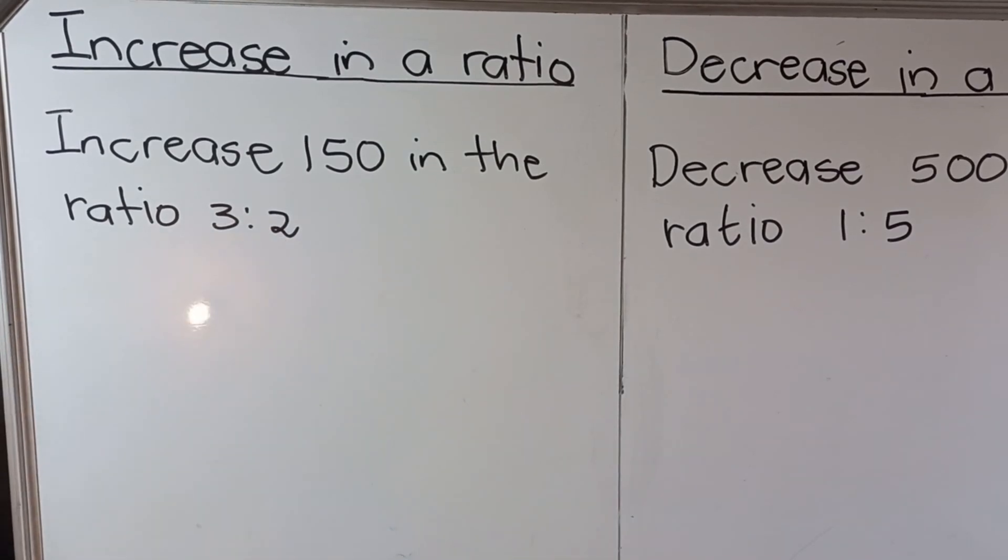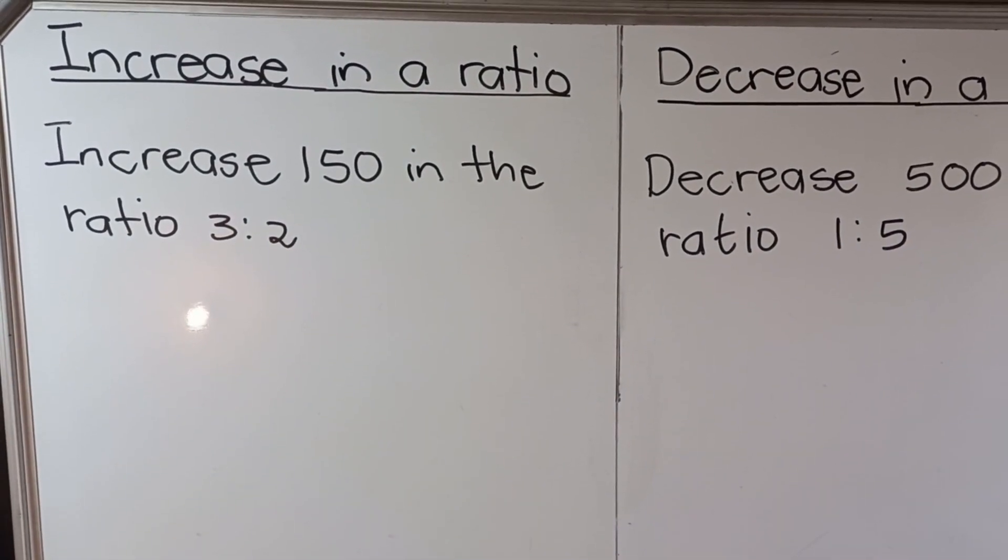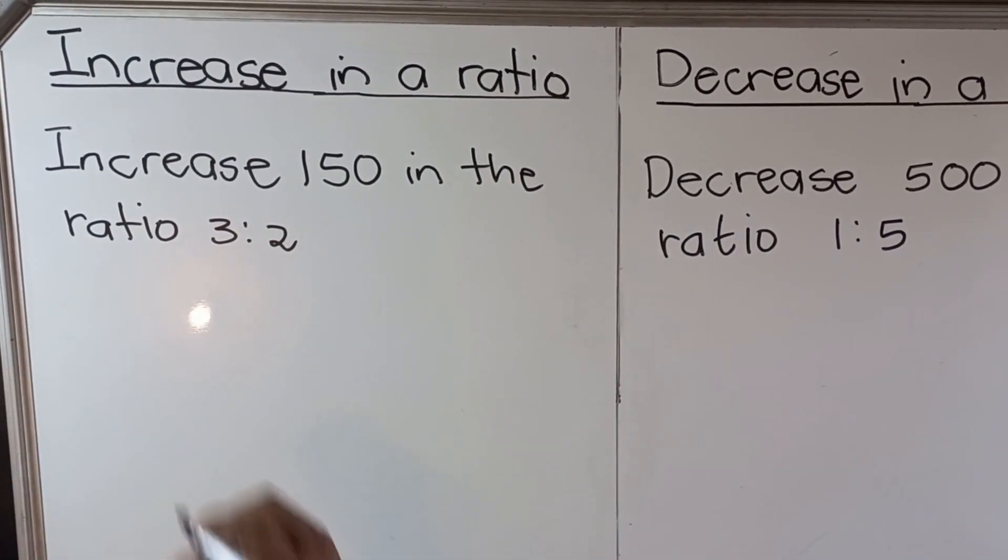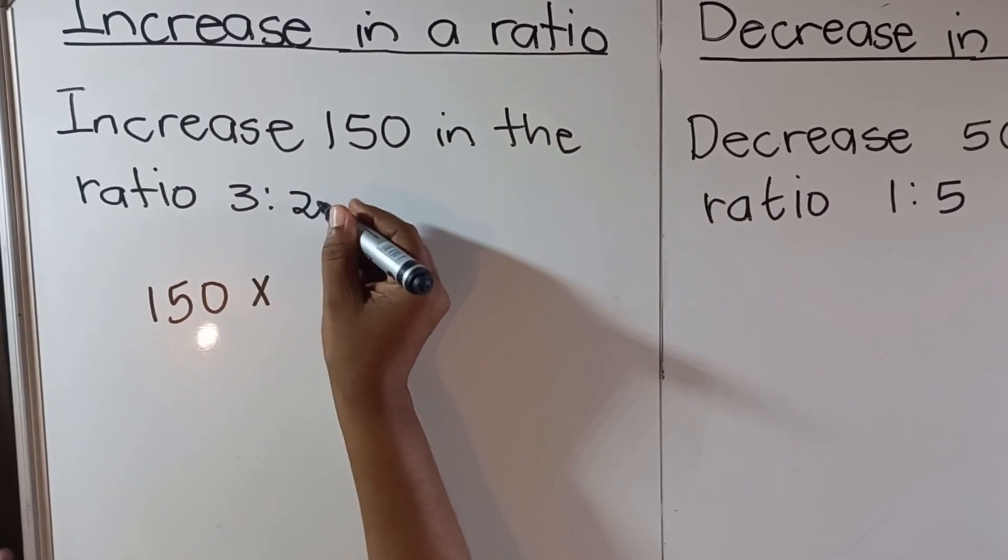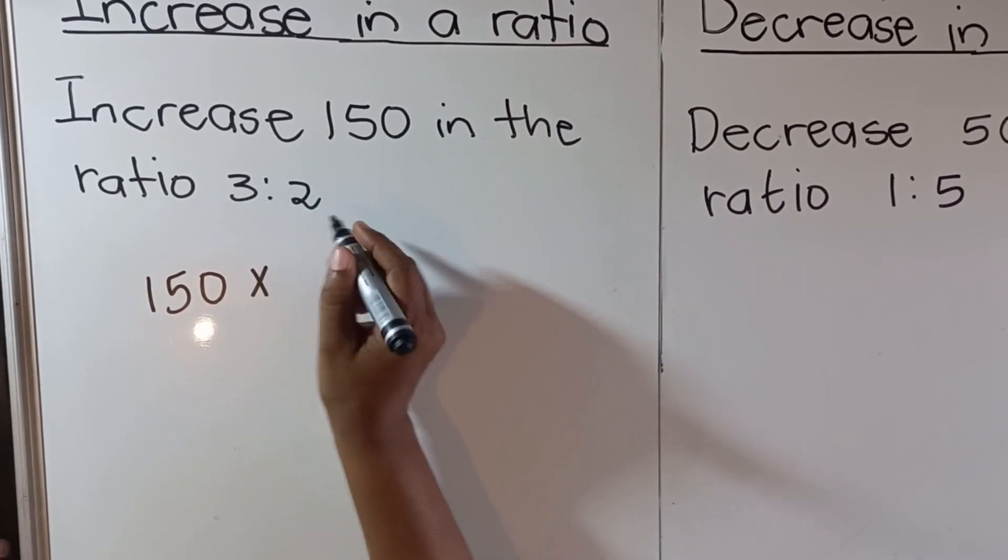When they say increase in a ratio 150, you're going to say 150, and then you say multiply. Then you write the ratio as a fraction. Which number is big here? 3 is bigger than 2, so you go 3 over 2.